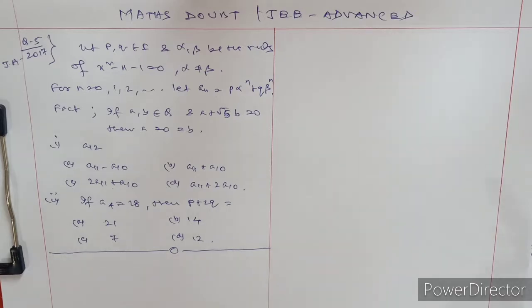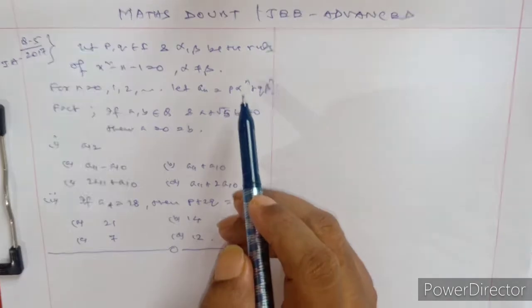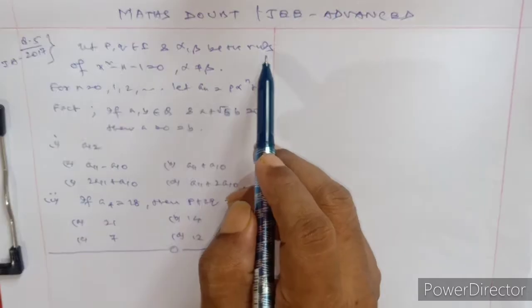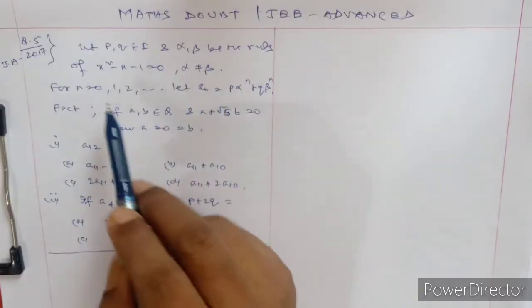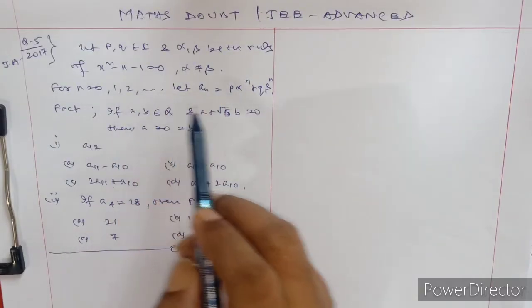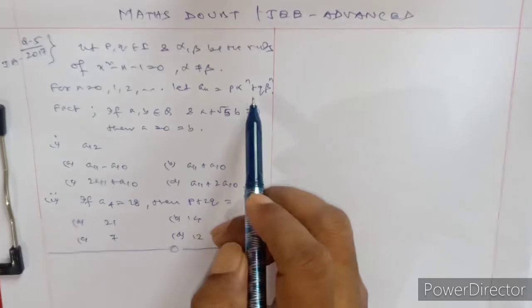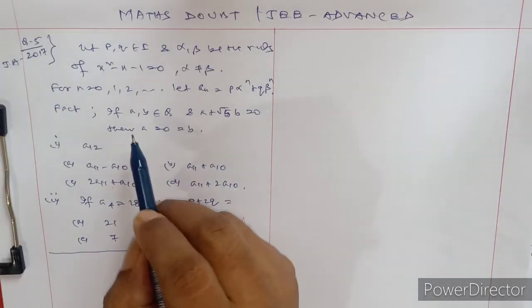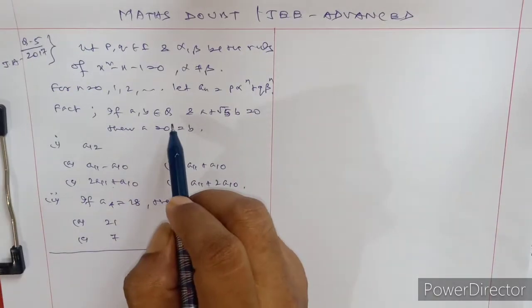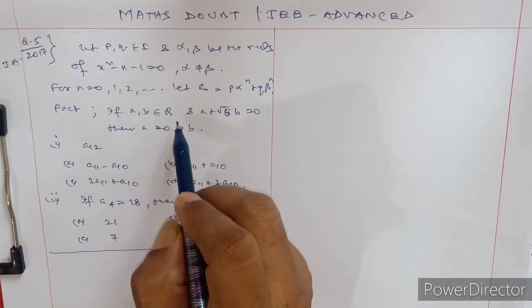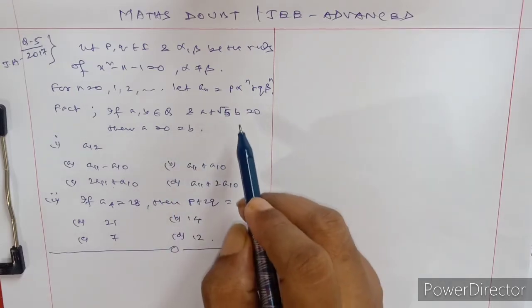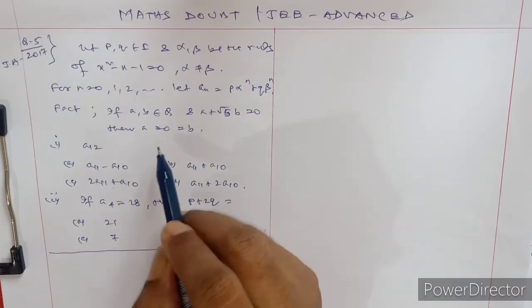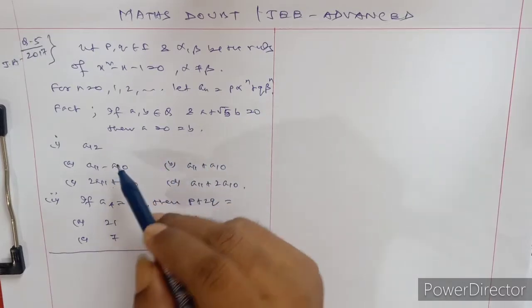Hello, good morning. Let p, q belong to integers and α, β be the roots. For n = 0, 1, 2..., let aₙ = pαⁿ + qβⁿ. The key fact is: if a, b belong to rational numbers and a + √5·b = 0, then a = 0 and b = 0.